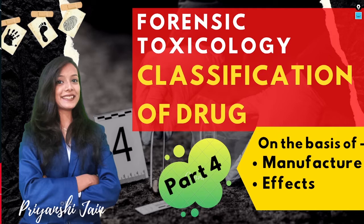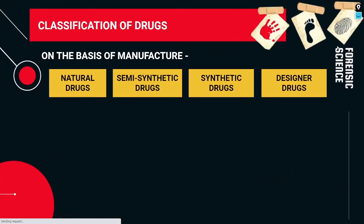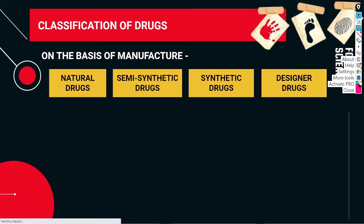Before starting this video, if you are new to the channel please subscribe, like the video and share it. So let's start — today we will study drug classification. In the last video we classified poisons. Today we are going to see drug classification, and here we will classify drugs on the basis of manufacture and on the basis of effect.